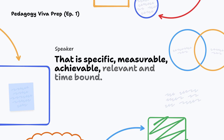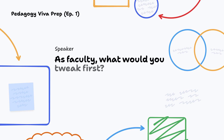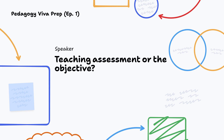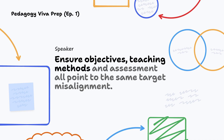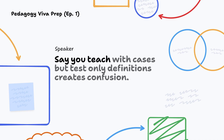As faculty, what would you tweak first — teaching, assessment or the objective? Start with alignment. Ensure objectives, teaching methods and assessment all point to the same target. Misalignment — say you teach with cases but test only definitions — creates confusion.